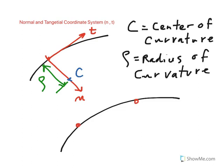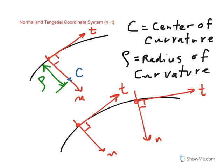So let's say it moves from here to here, the t-axis here is this, but the t-axis here is now different because the particle has moved. And then the normal axis similarly is like that here and 90 degrees.